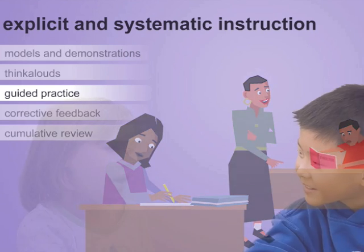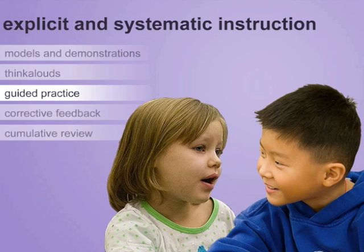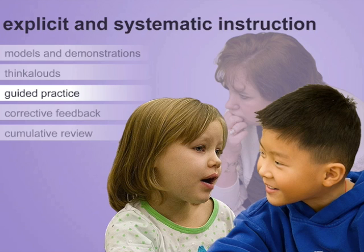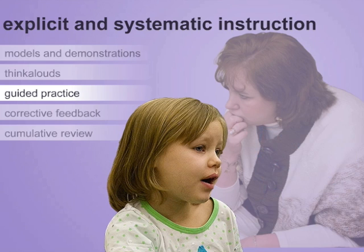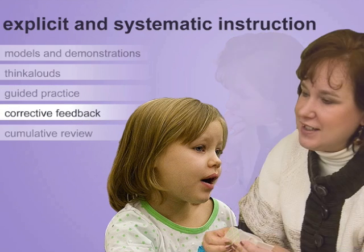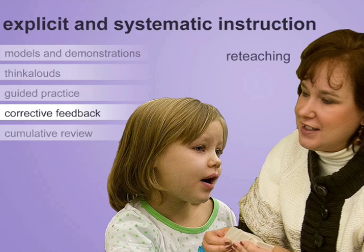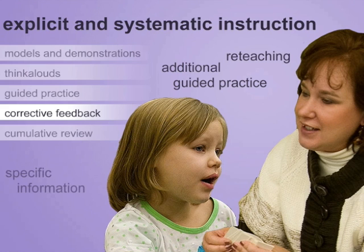During practice, students should be encouraged to talk out loud to both their peers and the teacher about their choices of strategies, reasoning behind problem-solving steps, and solutions. When students talk about their reasoning, teachers are able to provide helpful, corrective feedback. This feedback often involves re-teaching and additional guided practice and should provide specific information about what students did accurately and what errors they may need to correct.